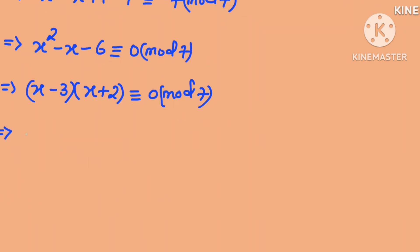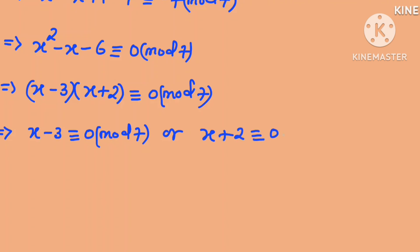This implies that x minus 3 is congruent to 0 in mod 7, or x plus 2 is congruent to 0 in mod 7, since 7 is a prime number.